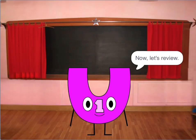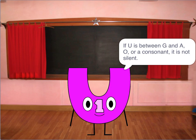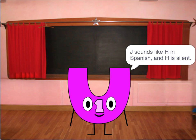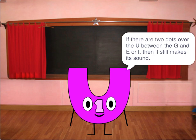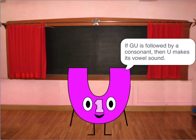Let's return back to the classroom. Now, let's review. We learned that when U is between G and E or I, it is silent. If U is between G and A, O, or a consonant, it is not silent. If you add a diéresis to the U between G and E or I, then it still makes its sound. If U is directly followed by E or O, then G makes its hard sound. If GU is followed by a consonant, then U makes its vowel sound.